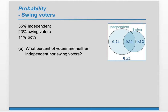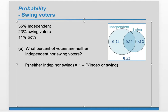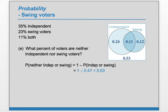Part E: what percent of voters are neither independent nor swing? They must be outside both circles, which is the complement of the 'or' statement. The probability of neither independent nor swing equals one minus the probability of independent or swing: 1 minus 0.47 gives us 0.53.